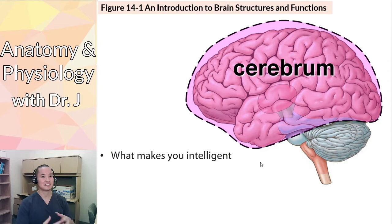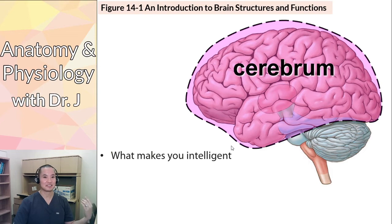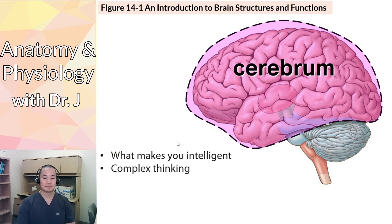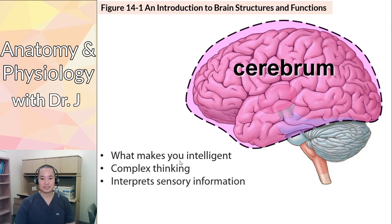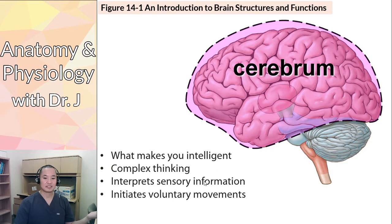This is what makes you intelligent — what you're hopefully using during the exam. This is what you use when you're doing conscious thought, making decisions, and forming your personality. All of this is in your cerebrum. Complex thinking, interpreting sensory information, voluntary movement, and storage of memories as well.